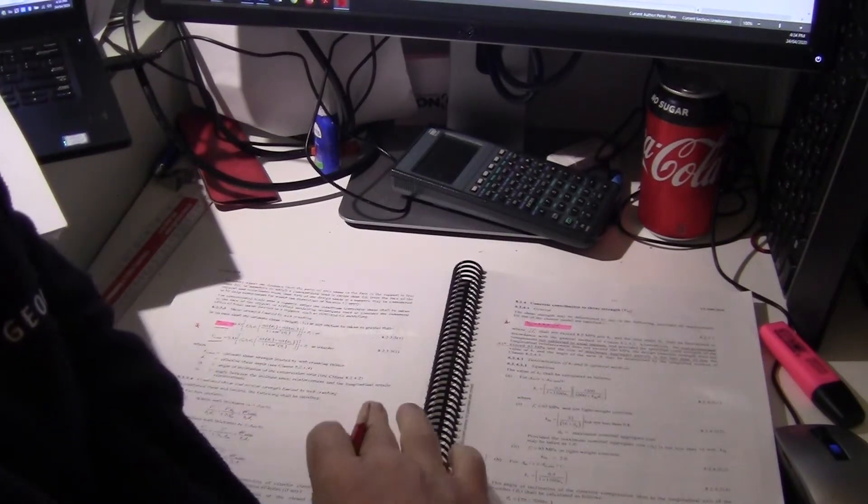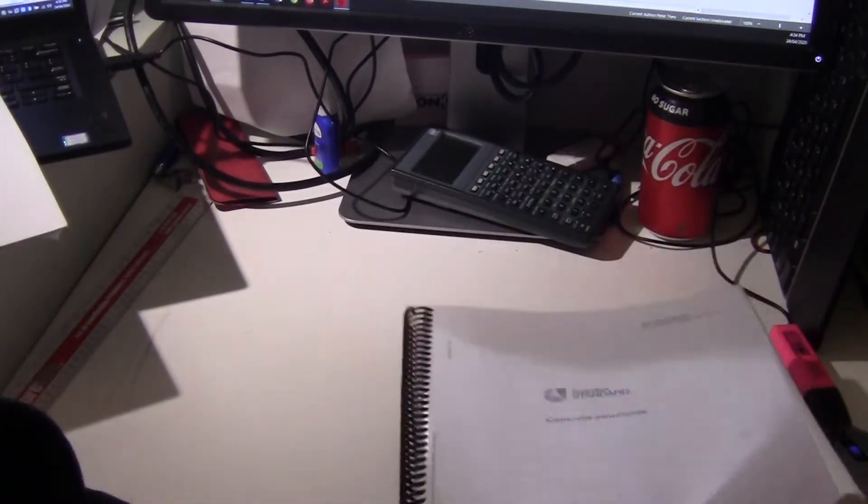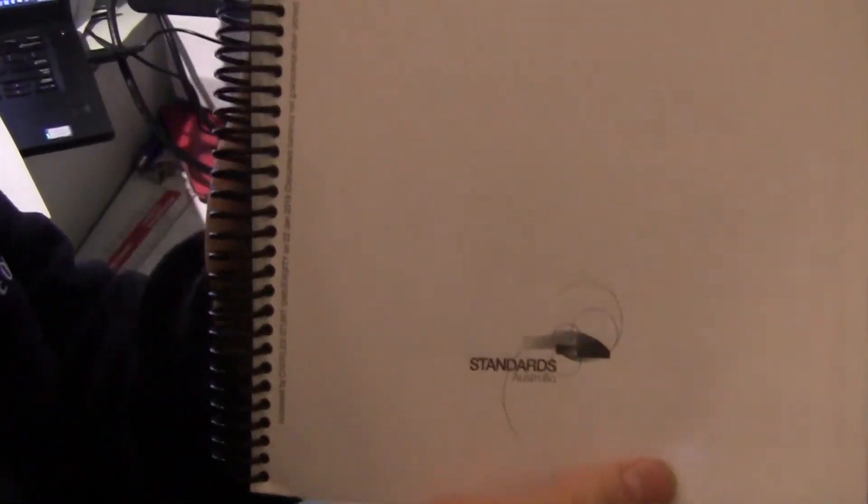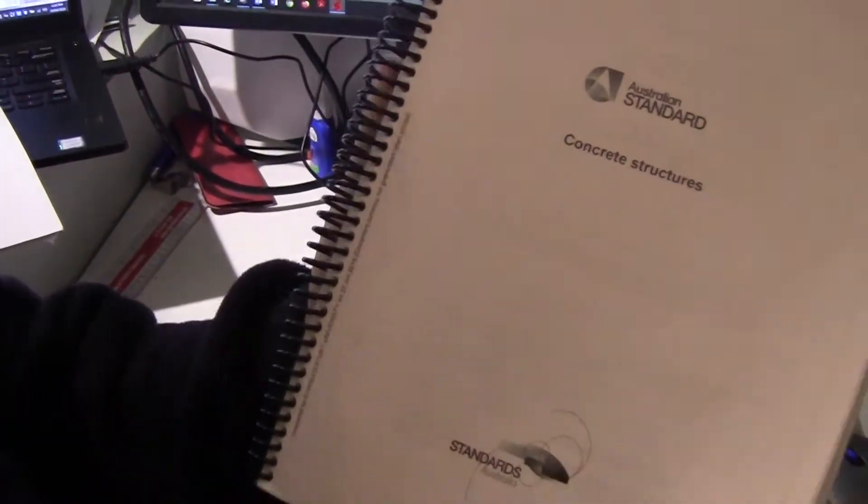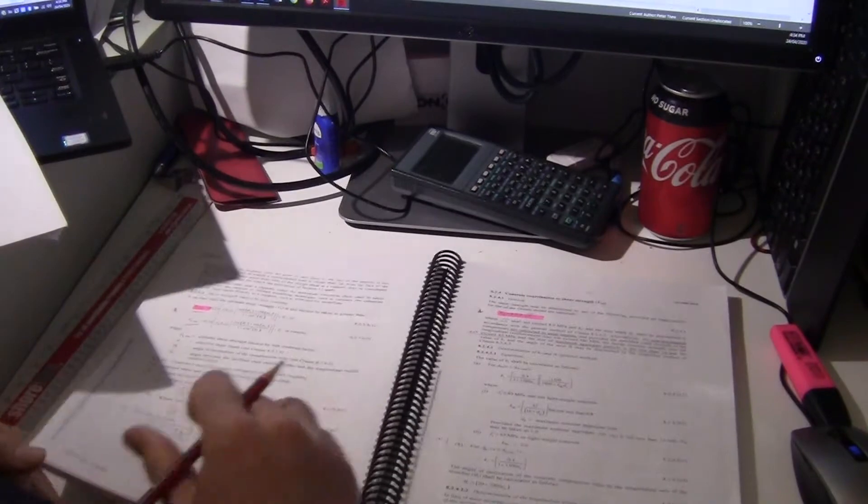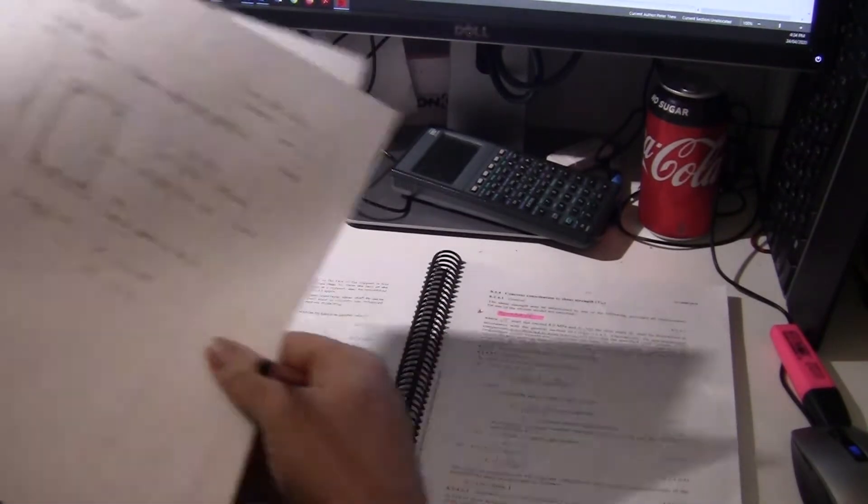Okay, we are going to go through an example of a shear and torsion problem. We'll be working through AS3600, which is concrete structures. We're going to do this problem here.